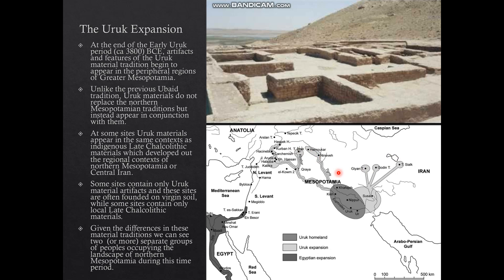We can see these differences as representing two or more separate groups of people living on the landscape and occupying much of northern Mesopotamia at this time. The Uruk system, while it spreads, doesn't spread in the way we would think about an expansive military state conquering populations — although we'll talk about some examples at the site of Hamakar where this might actually be the case — but rather it expands through trade and controlling access to resources.